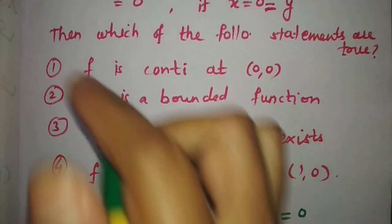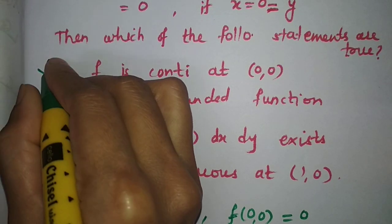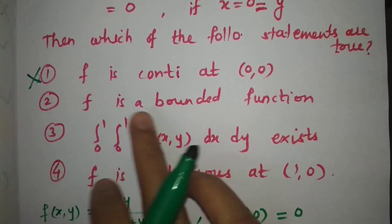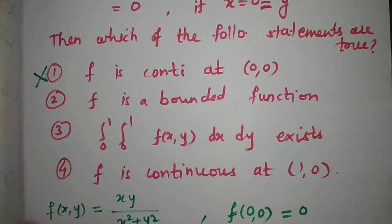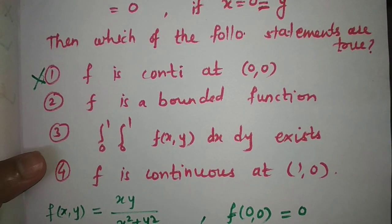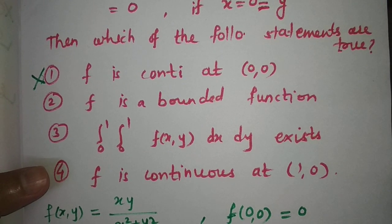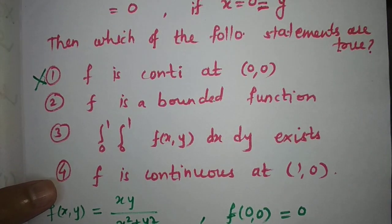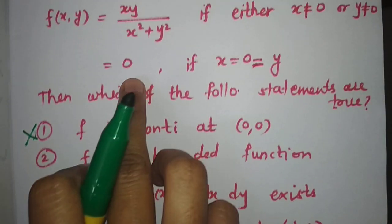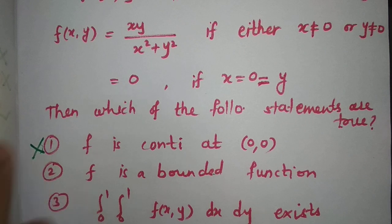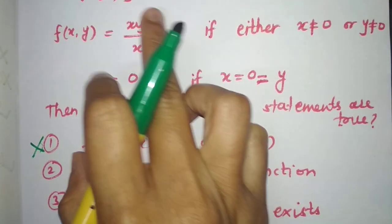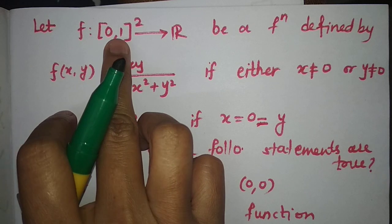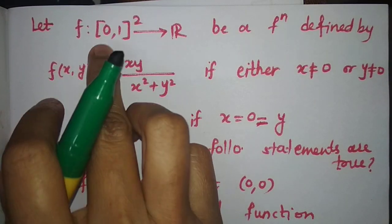Hence option one is not correct. Now option two says f is a bounded function. We need to show that this function is bounded by some constant. The value zero is clearly bounded. We need to determine whether the expression xy/(x²+y²) is bounded on [0,1]×[0,1].